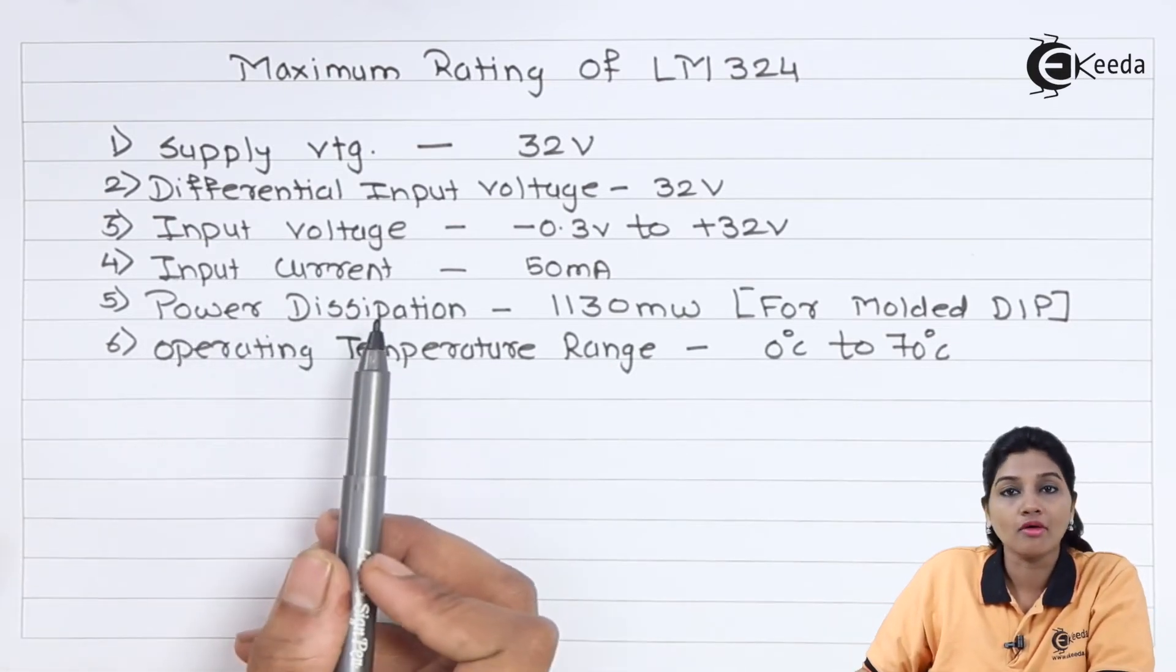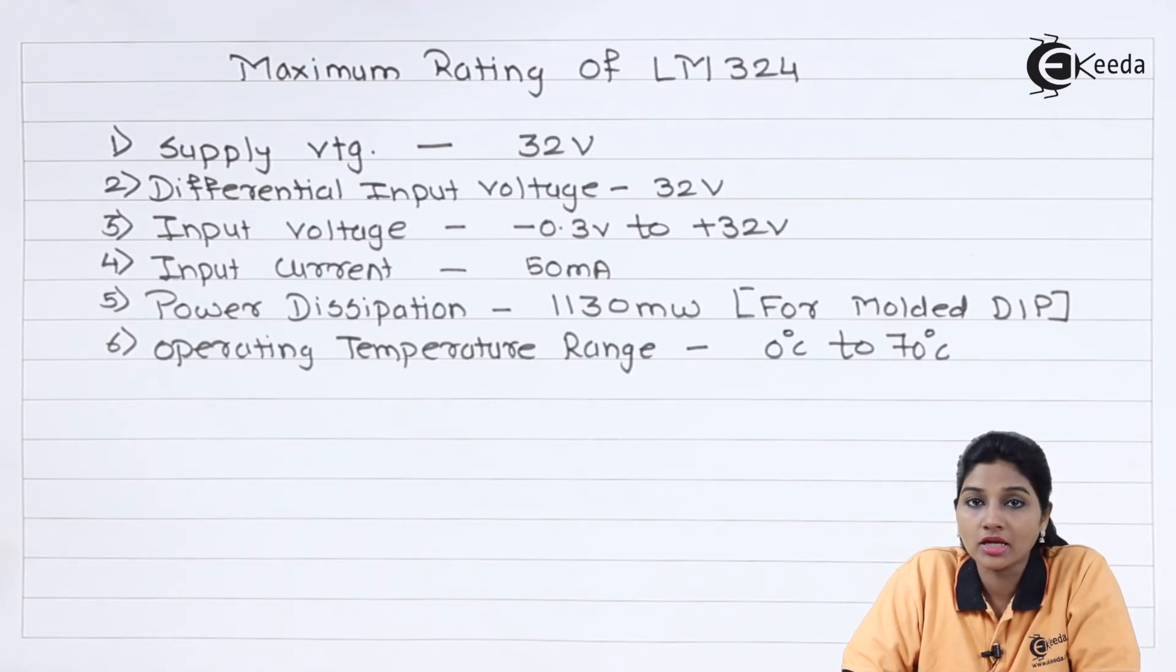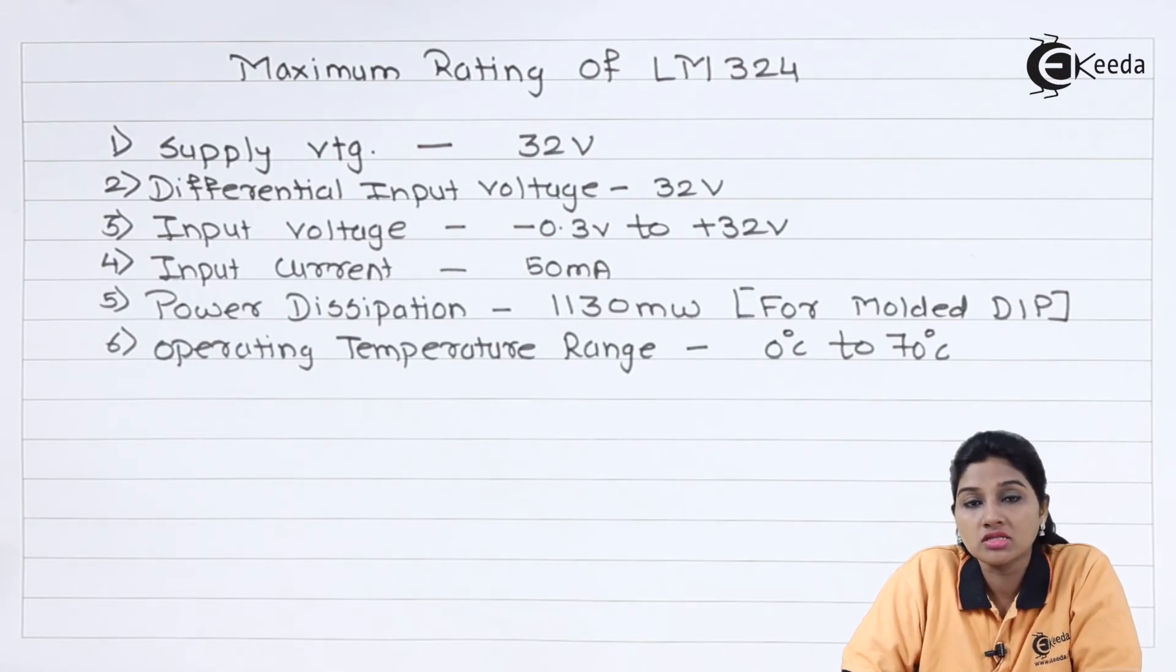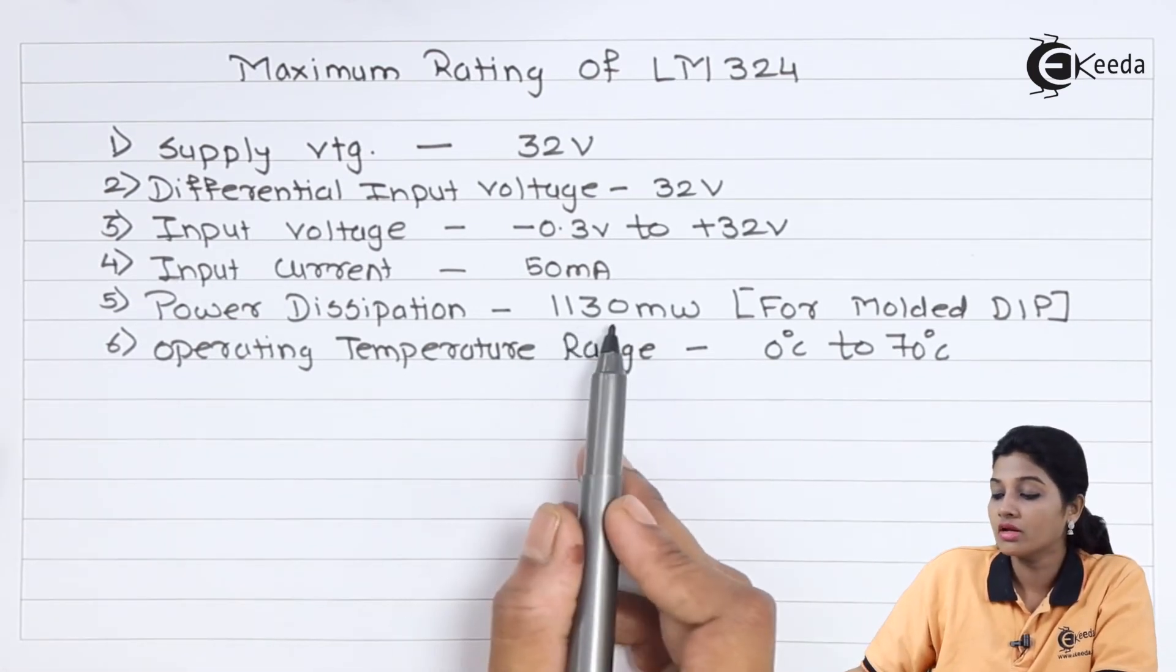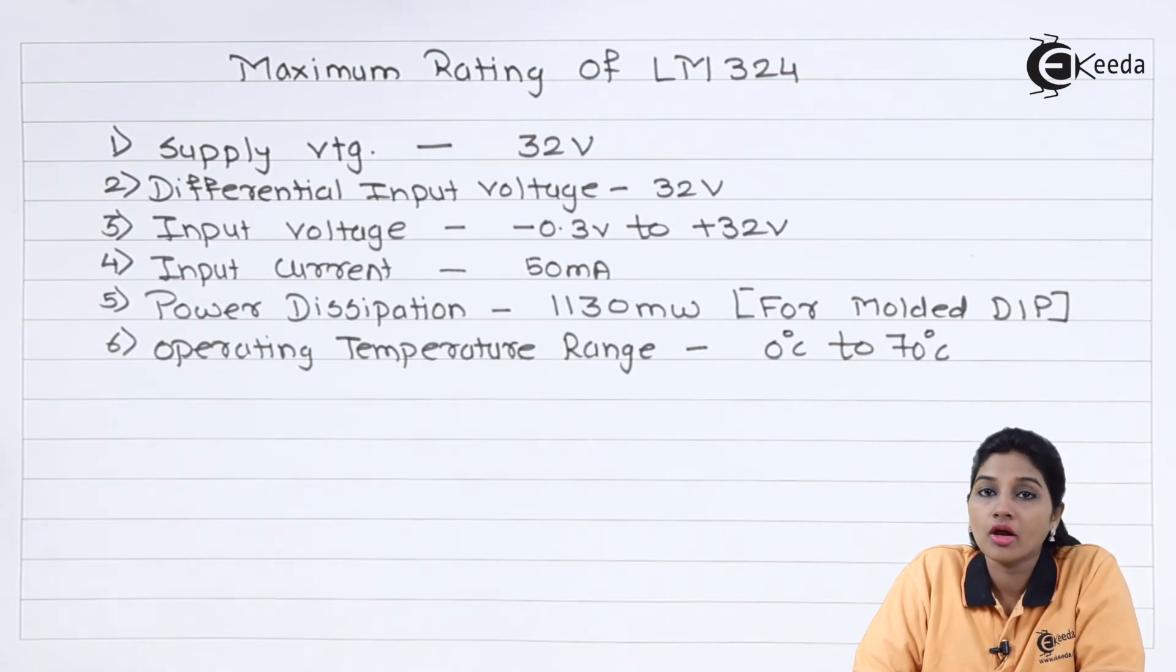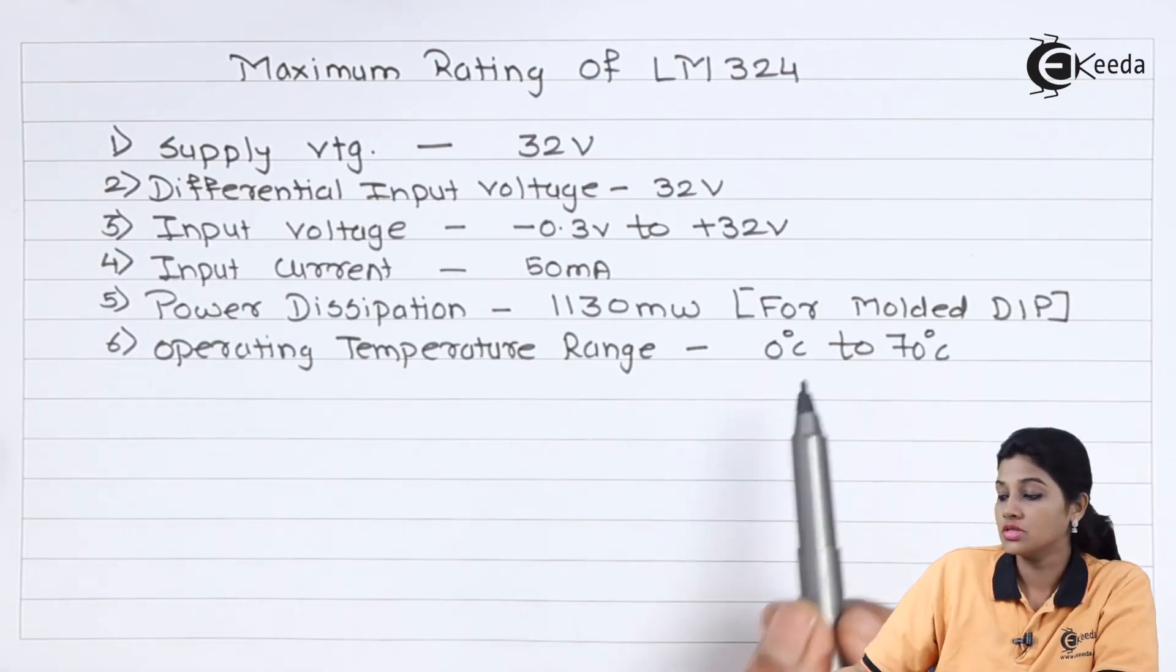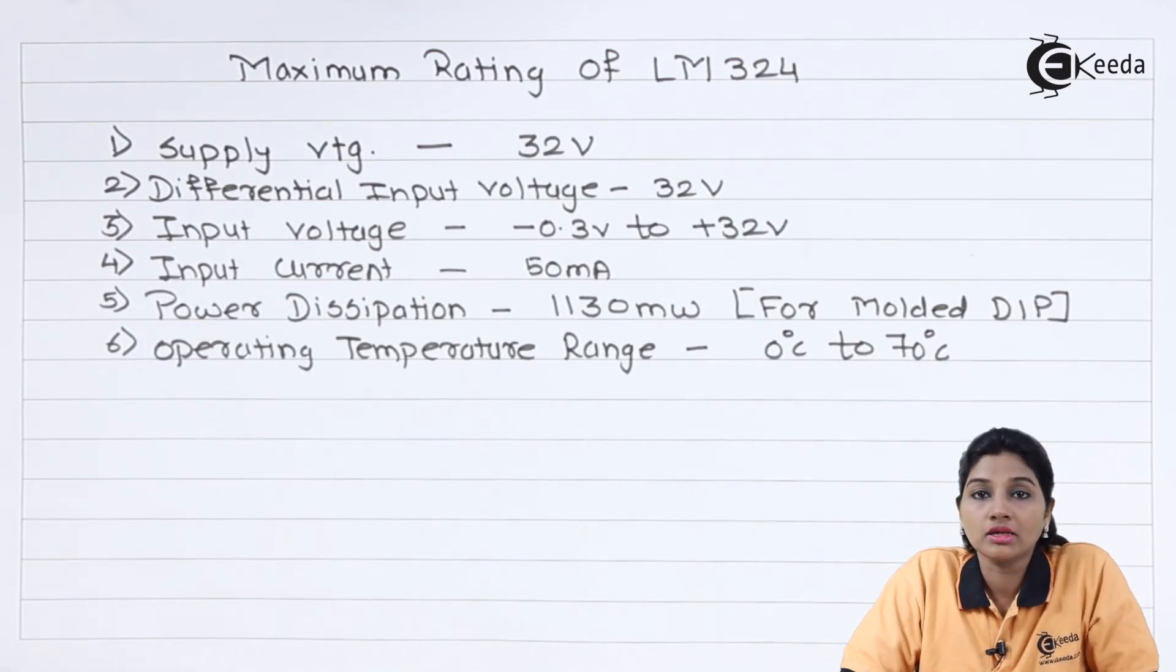The next rating is related to power dissipation. As the IC is available in variable forms, it can be available in DIP package or cavity DIP package. So here we are considering molded DIP package and for that purpose the power dissipation rating is 1130 mW. The operating temperature range for LM324 varies from 0 degree Celsius to 70 degree Celsius. So these are the maximum ratings that can be used with LM324.